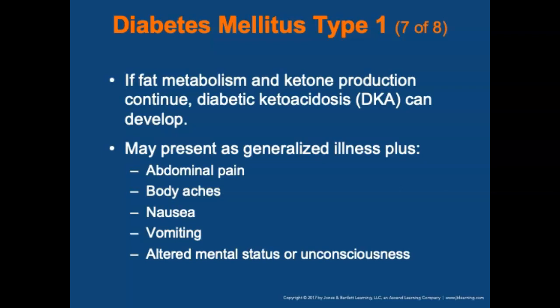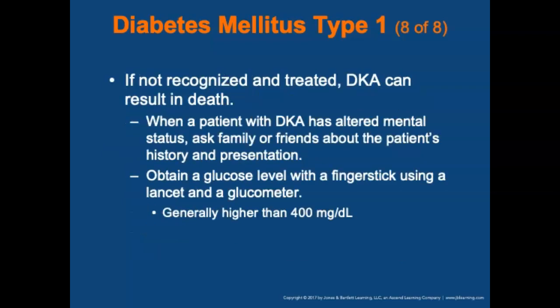DKA may present as generalized illness along with abdominal pain, body aches, nausea, vomiting, or an altered level of consciousness — or unconsciousness if severe. If not rapidly recognized and treated, DKA can result in death. When a patient with DKA has altered mental status, ask family or friends about the patient's history and presentation. Obtain a glucose level as soon as possible with a finger stick using a lancet and glucometer. Generally, blood sugar levels will be higher than 400 mg/dL.